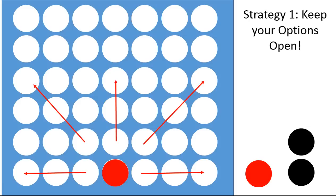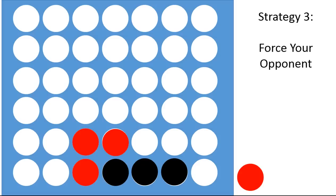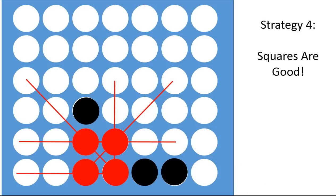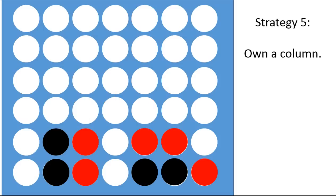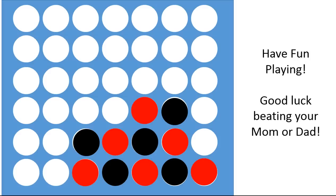So, a quick recap. Strategy number one, keep your options open. Strategy number two, purposefully block. Strategy number three, try and force your opponent to waste his or her move. Strategy number four, squares are good. Strategy five, own the column. Strategy six, set up a win-win situation. All right, have fun playing. Good luck beating your mom or dad at this game. Have a wonderful day.